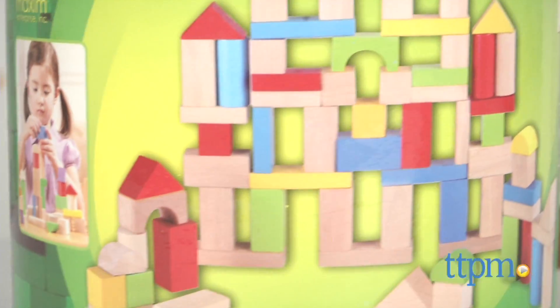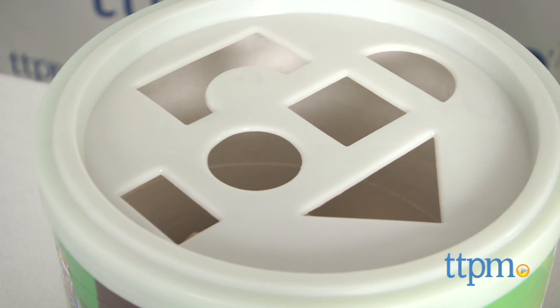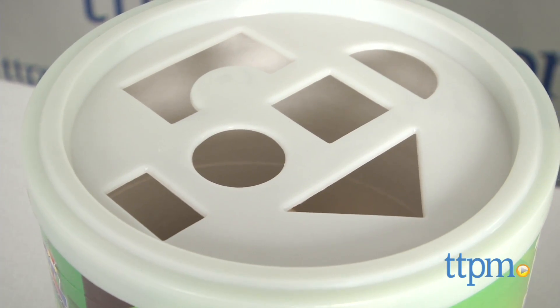Packaged in a canister, these are not only easy to store, but the top doubles as a shape sorter, allowing kids ages 2 and up to practice their shapes and work on their hand-eye coordination and fine motor skills.